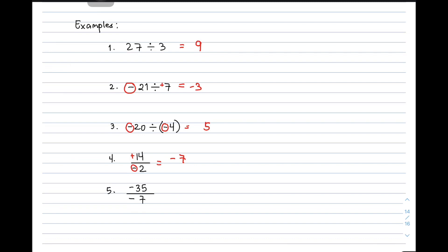Next, item number 5. We have negative 35 divided by negative 7. As you can see, the signs are the same — one is negative, one is also negative. So given the rule, the quotient natin is positive. And 35 divided by 7, that will give you the quotient of 5. So I hope na sa first 5 examples natin, you already mastered how to divide integers.